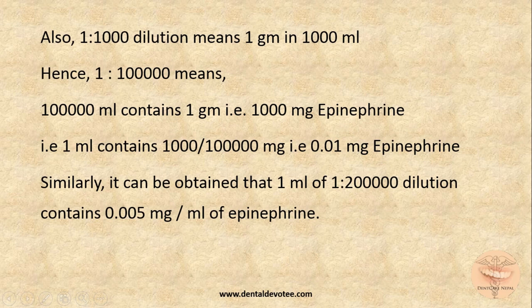What does 1:1000 dilution mean? It means 1 gram in 1000 ml. Hence 1:100,000 means 1 gram (that is 1000 mg) of epinephrine in 100,000 ml. Using the unitary method, 1 ml contains 1000 divided by 100,000, which is 0.01 mg epinephrine. Similarly, 1 ml of 1:200,000 dilution contains 0.005 mg per ml of epinephrine.